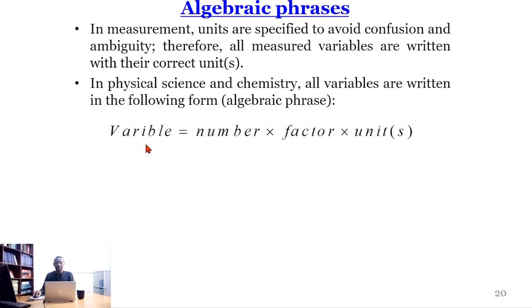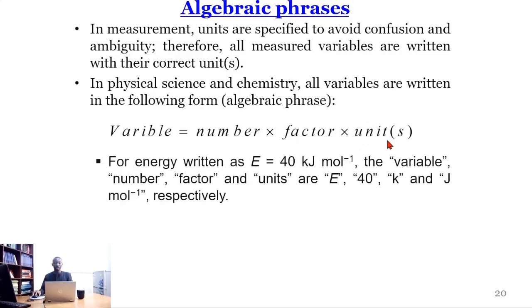There is a variable here, has a number, there is a factor, and then the units come last. Let's take the case of energy, for instance. E = 40 kJ/mol. The variable here is E, the number here is 40, the factor is k, the unit is J per mol.